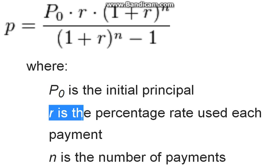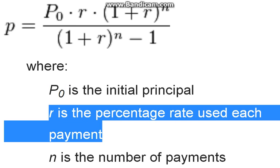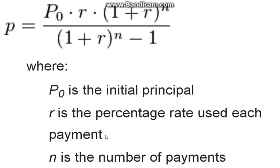or the percentage rate used each payment — the amount that the initial amount goes up by per payment on the loan. And then that times the quantity 1 plus R, to the nth power, where n is the number of payments.